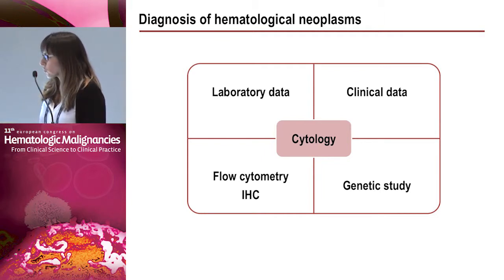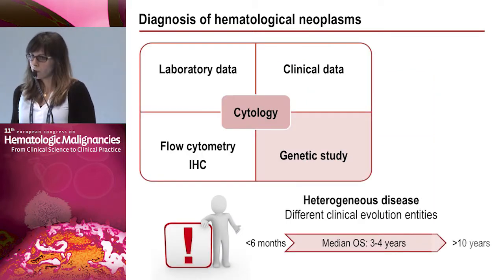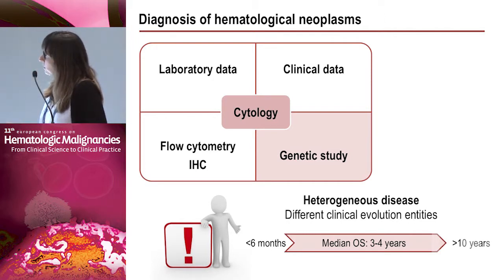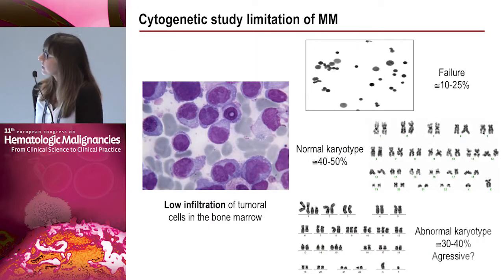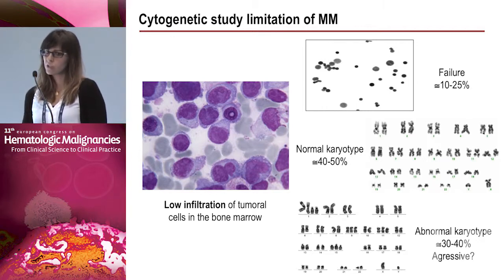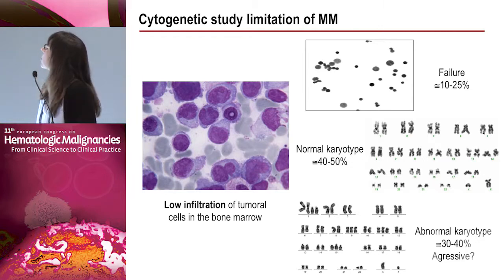The diagnosis of hematological malignancies is based on laboratory data, clinical data, patient symptoms, flow cytometry, immunohistochemistry, cytology, and genetic study. Genetic study is very important in multiple myeloma because it is a heterogeneous disease with different clinical entities, and overall survival ranges from less than six months to more than ten years. A key limitation of cytogenetic study is the low infiltration of tumor cells in the bone marrow. Culture failure occurs in 10-25% of cases, a normal karyotype is found in about half, and an abnormal karyotype — indicating disease aggressiveness — in 30-40%.